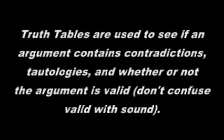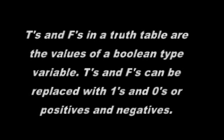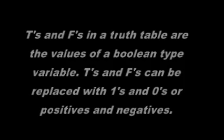Truth tables are used to see if the argument contains contradictions or tautologies. A contradiction is a proposition that will always be false. A tautology is a proposition that will always be true. In a truth table, if a contradiction exists, there will be a column filled all with false values, represented by the letter F. If a tautology exists, there will be a column filled with truth values, represented by the letter T. In a truth table, the true and false values do not necessarily mean true or false — these are only values assigned to a Boolean-type variable. Some truth tables use ones and zeros instead of Ts and Fs to avoid this confusion.